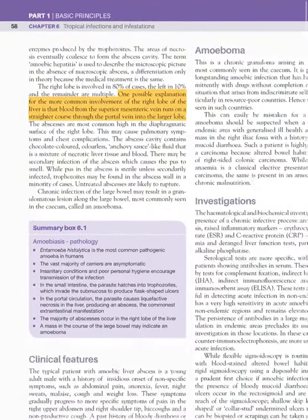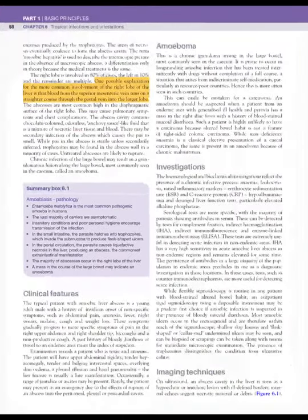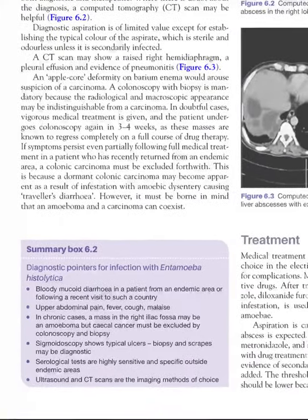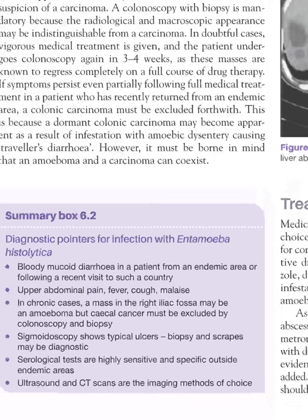The most common symptom is bloody mucoid diarrhea, also known as amoebic dysentery. It may also present with right upper abdominal symptoms like fever and malaise. A liver mass may cause respiratory symptoms, and the mass in the colon may lead to amoeboma, but we must rule out colon cancer. The flask-shaped ulcer can be seen on flexible or rigid sigmoidoscopy.